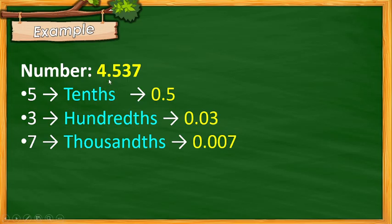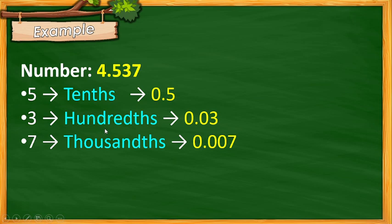Now we have 4.537 thousandths. Let's identify each digit's value: 5 is in the tenths place, therefore we have 5 tenths or 0.5. Next, digit 3 is in the hundredths place, therefore 3 hundredths or 0.03. Then, 7 is in the thousandths place, therefore 7 thousandths or 0.007.